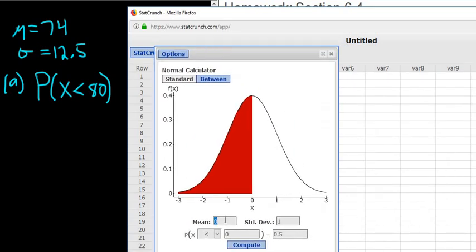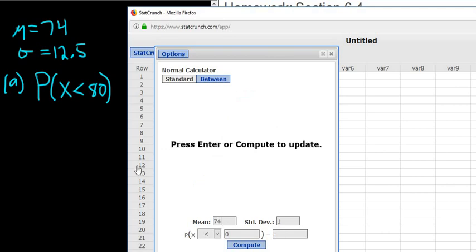The mean is 74, type that in, 74. The standard deviation is 12.5. And then less than 80. Now, there is no less than choice, but for the normal distribution, it is the same. Less than is the same as less than or equal to for the normal distribution. So everything looks okay. We click Compute.